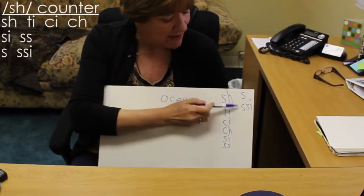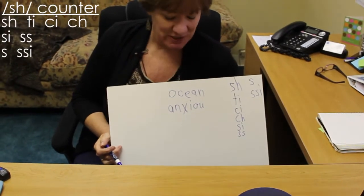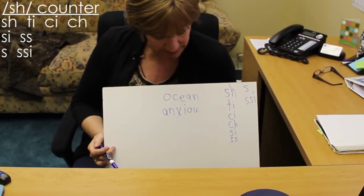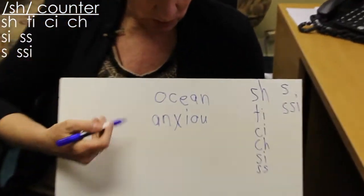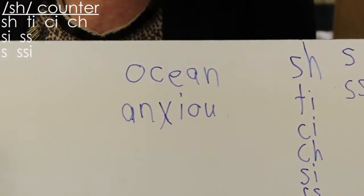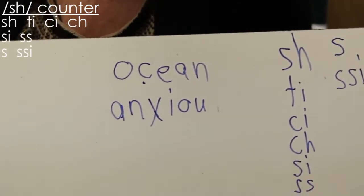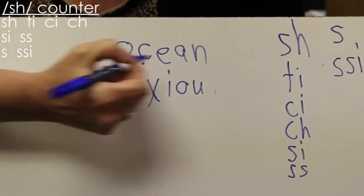All right, so here we have eight ways that we've discovered so far to spell the sh sound, and we're gonna look at two more that are also kind of crazy. So, ocean. Here's our one letter spelling, here is our spelling for sh, and this is our...